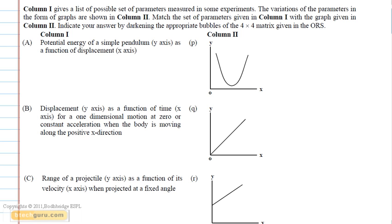In this question, column 1 is given with a list of possible set of parameters measured in some experiments, and in column 2, we have been given some graphs.